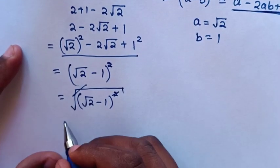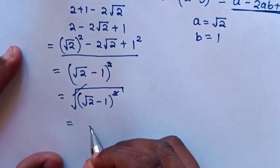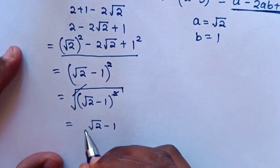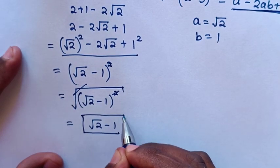This square root will cancel with square, so the answer is square root of 2 minus 1. This is the final answer.